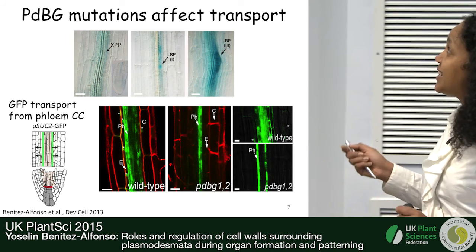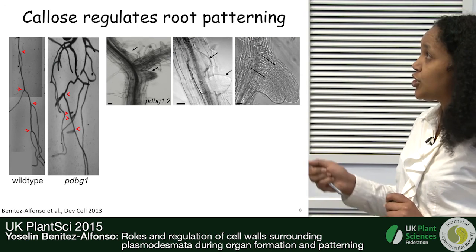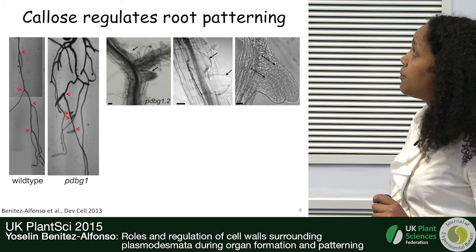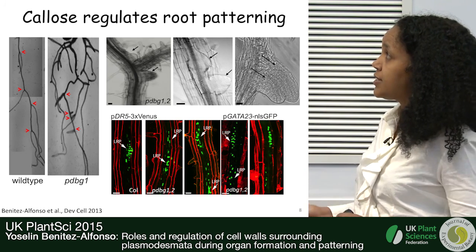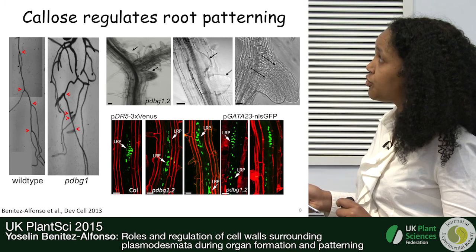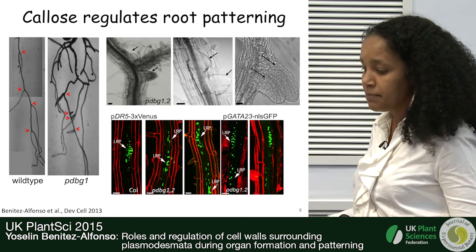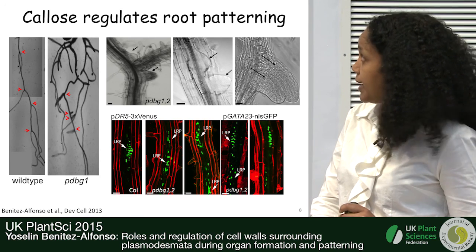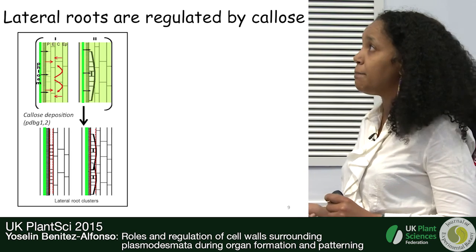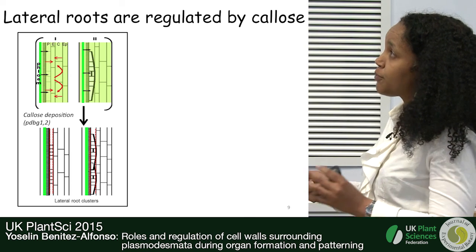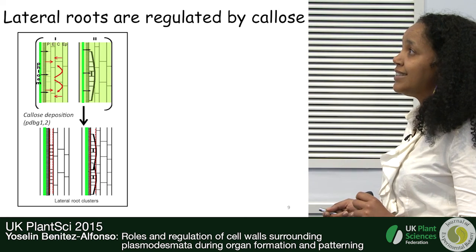Given the very specific expression of this beta-glucanase in lateral roots, the mutants show a lateral root phenotype. The mutants increase lateral root number and produce beautiful clusters of lateral roots, verified using marker lines such as DR5. Lateral root initiation sites are clustered close together, different from the wild type. A similar phenotype can be seen using the GATA23 reporter line. From this, we got a model where callose deposition is involved in determining the patterning of lateral roots.